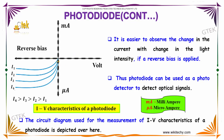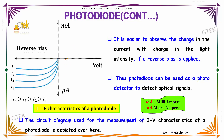It is easier to observe the change in current with the change in light intensity when a reverse bias is applied. Thus, a photodiode can be used as a photodetector to detect optical signals. The circuit diagram is shown with current and voltage.